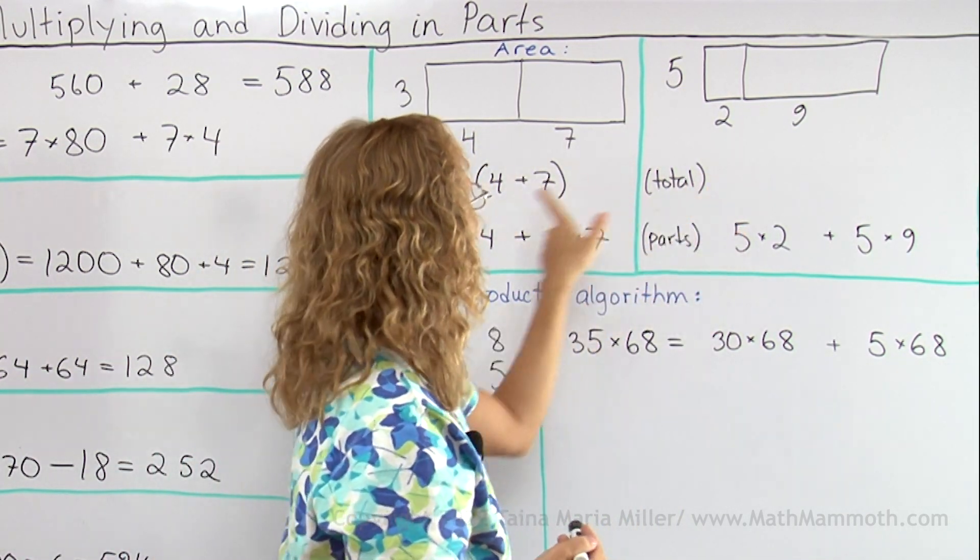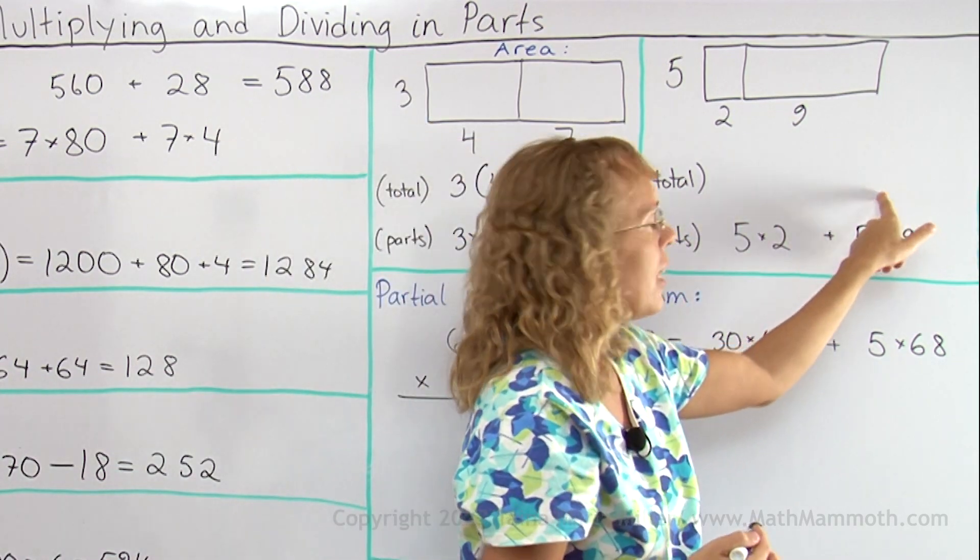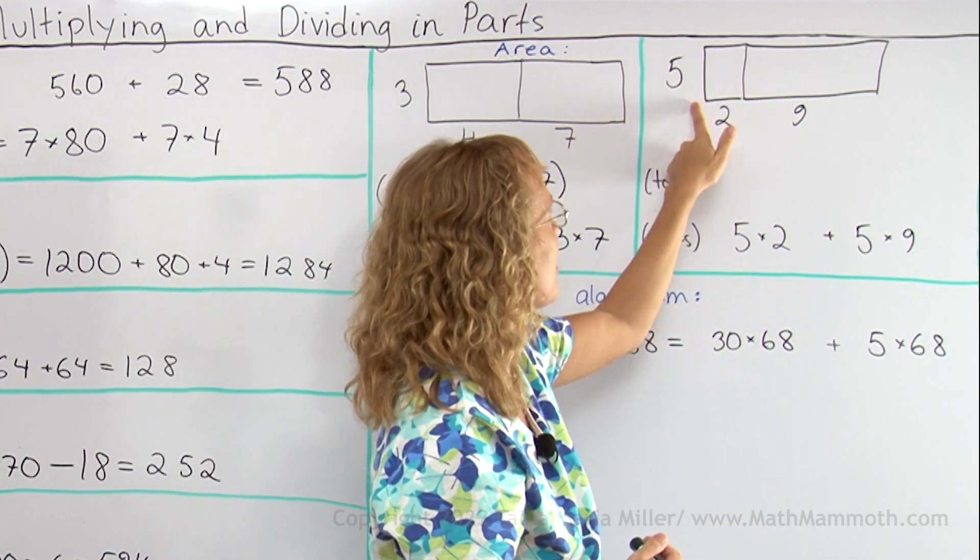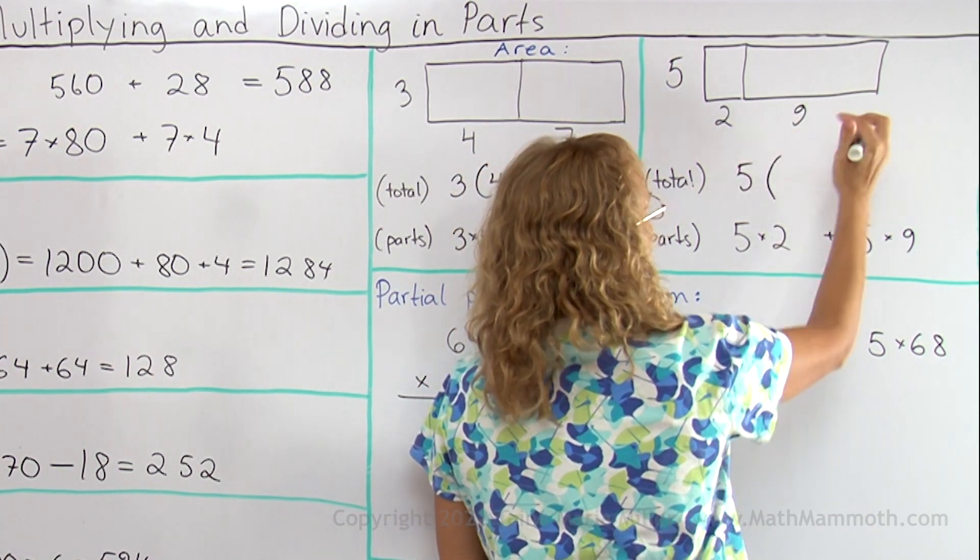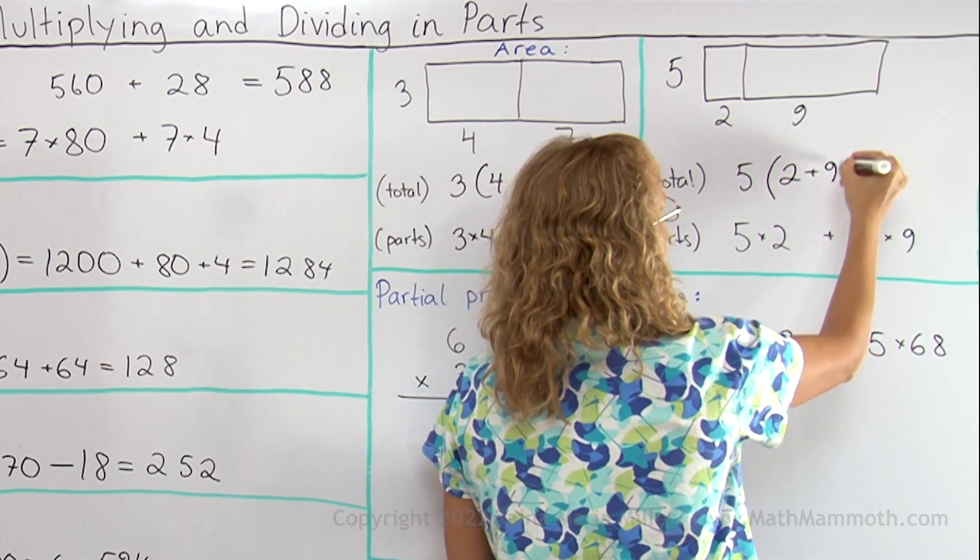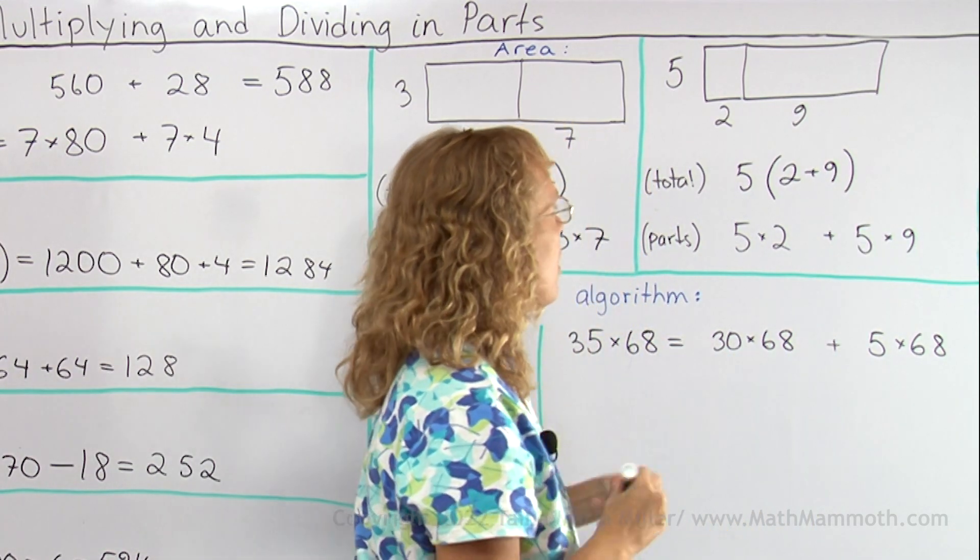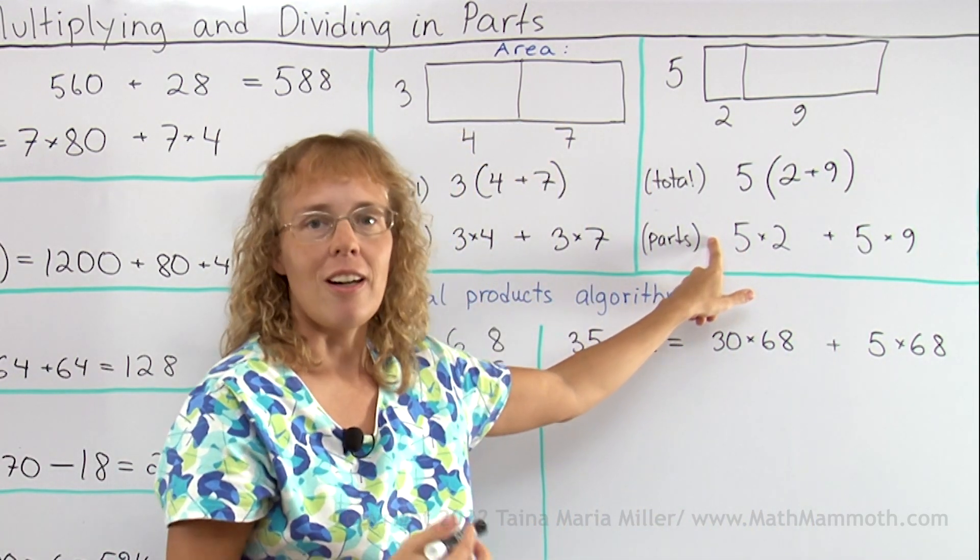I will also write it in this manner. Okay? As the total area where I have this times this whole thing. 5 times, and this whole thing as 2 plus 9. There. And these two expressions here are equal.